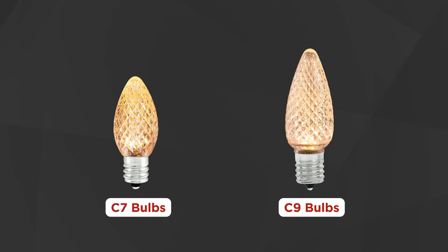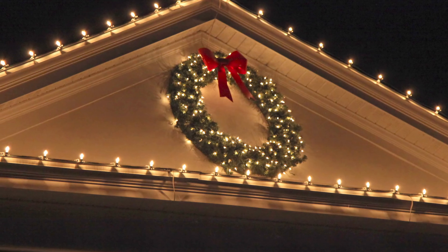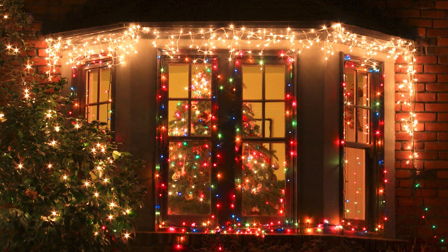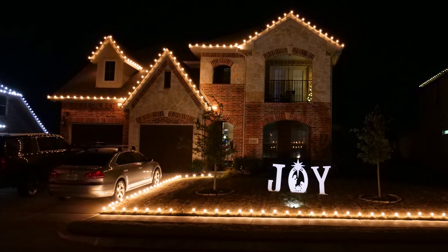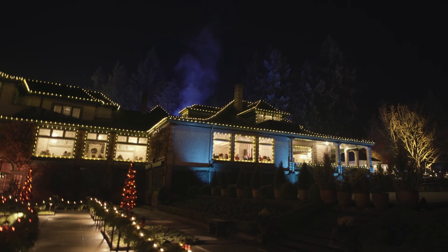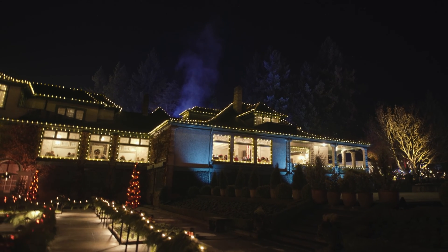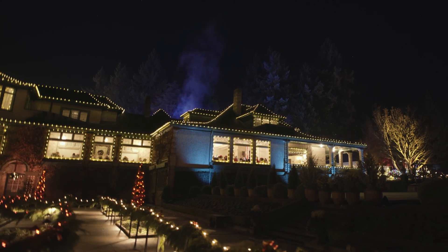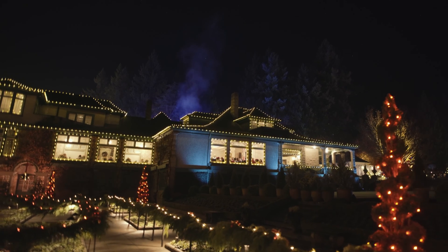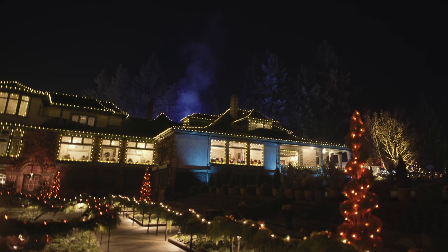C7 and C9 bulbs are the most common and well-known Christmas lights available. They are used for roof lines, windows, driveways, and everything in between. And when they are paired with commercial stringers and spools, you can build large beautiful runs of light.